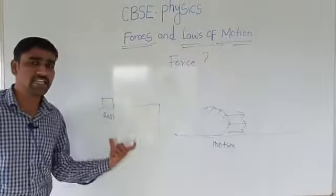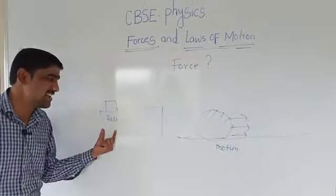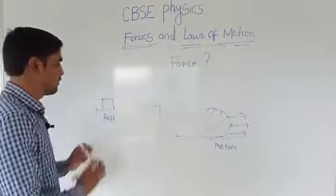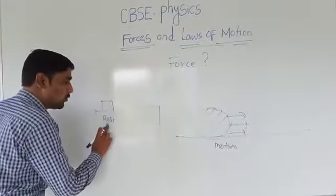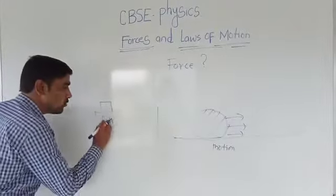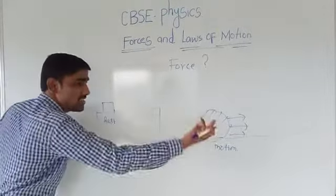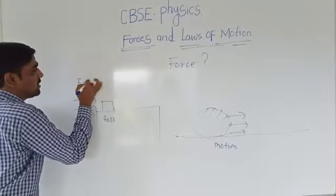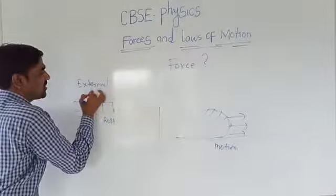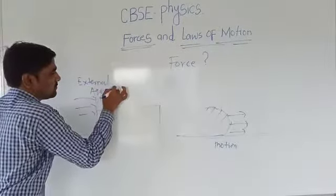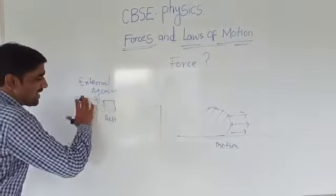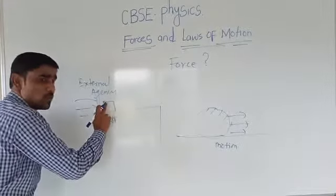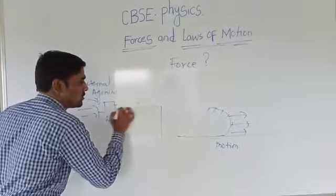So there are two conditions here. One is the body is at rest, and the second is the body is in motion. Now suppose I want to move this body from rest to motion — then what I have to do? I have to apply some external agency. Because of that external agency applied on this body, the body changes its position from rest to motion.